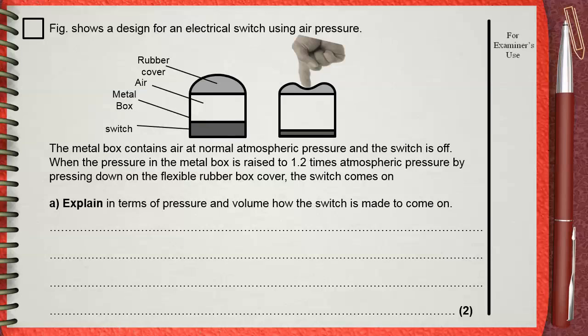When the pressure in the metal box is raised to 1.2 times the atmospheric pressure by pressing down on the flexible rubber box cover, the switch comes on.